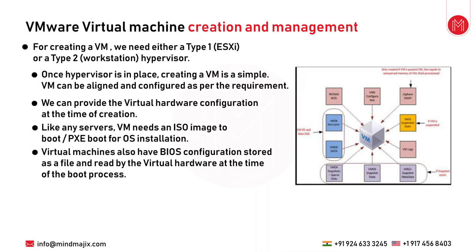A virtual machine is the end machine that serves the purpose of running an application. To create a VM, you need a hypervisor — either a Type 1 ESXi host or a Type 2 workstation. Once in place, create a new virtual machine and configure the CPU and memory as required. It is customizable and can be booted with the same ISO image used for normal OS installation, mounted via the virtual CD/drive option.